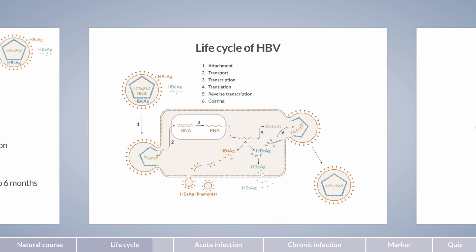Interestingly, hepatitis B virus does not cause cell destruction. Lysis of hepatocytes occurs as a result of the immune response targeted towards infected cells, which is carried out by cytotoxic T cells. In addition to the cellular defense by T cells, the body forms antibodies against the virus. The most important antibody is the anti-HBs antibody, which is able to directly bind to the viral surface and thereby neutralizes the virus. The second antibody is the anti-HBe antibody. As it does not directly bind to the virus, but only to the secreted HBe antigen, it is unable to completely clear the infection.